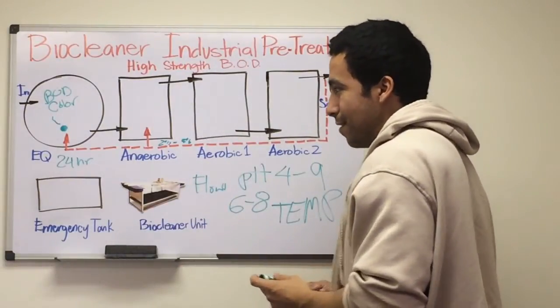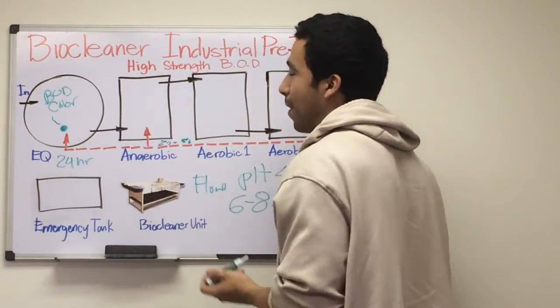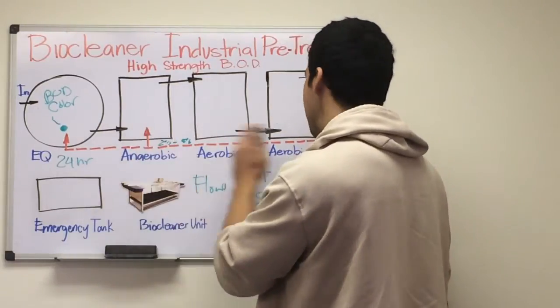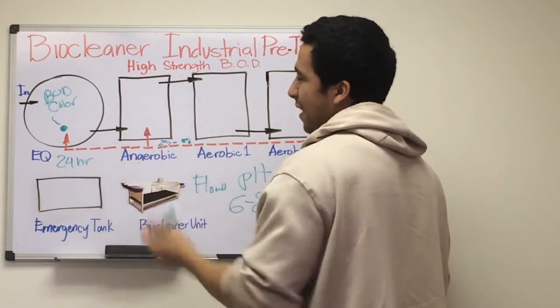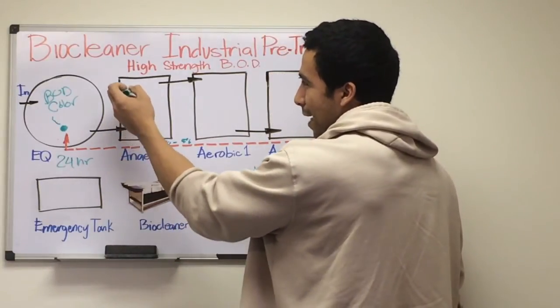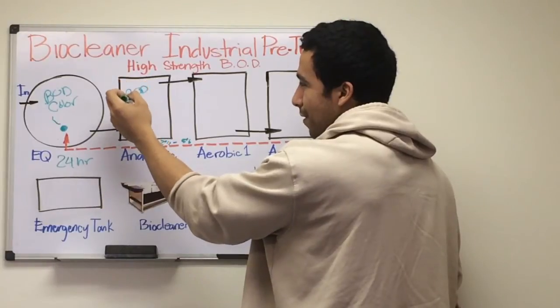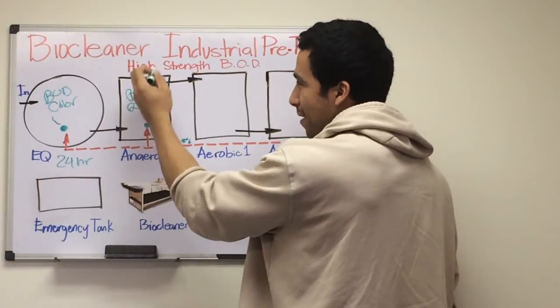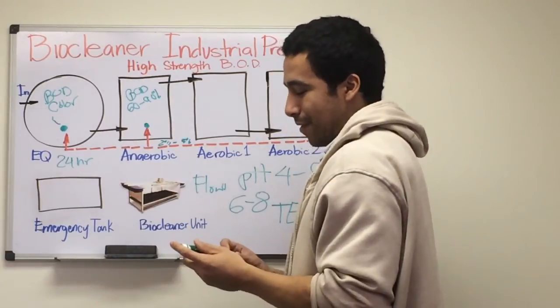After equalization, our first process in secondary treatment is anaerobic. We dose microbes here, and this is where we have most of our BOD reduction, from anywhere from 60% to 90% depending on the contaminant strength.